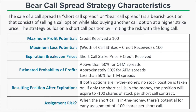If only the short call is in the money at expiration, you'll essentially have a short stock position of 100 shares, with your sale price being the short call's strike price. In regards to assignment risk, if the short call is in the money before expiration, there's potential for early assignment of negative 100 shares of stock per short call contract.